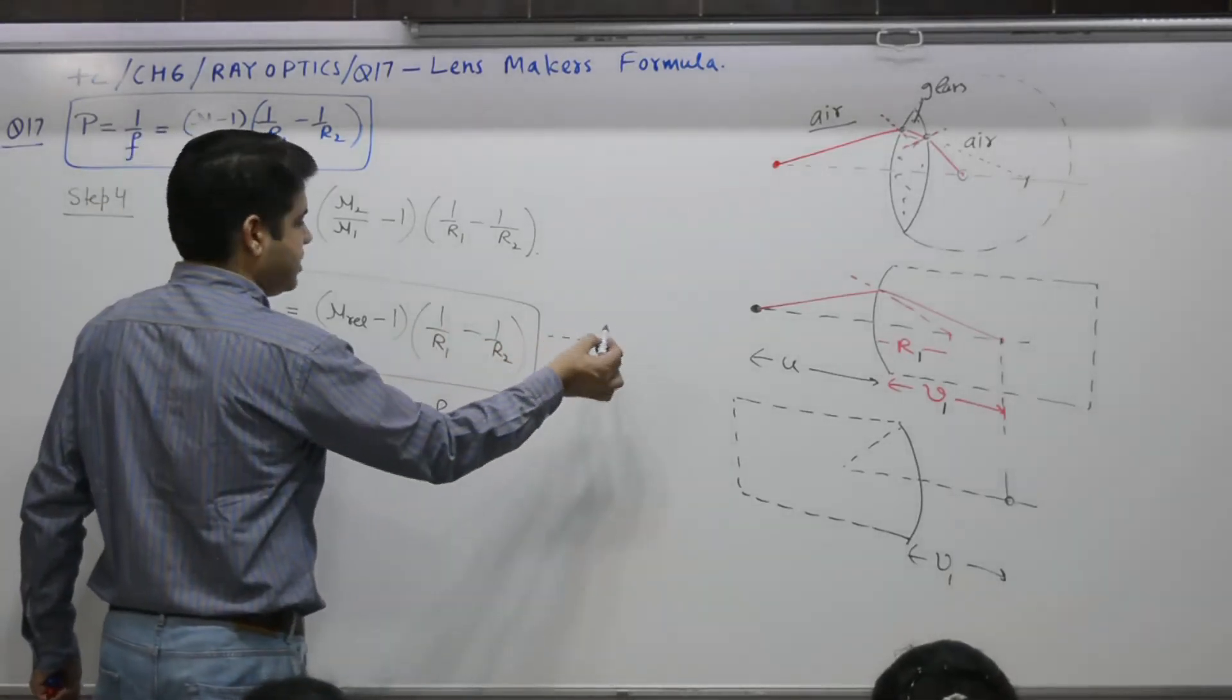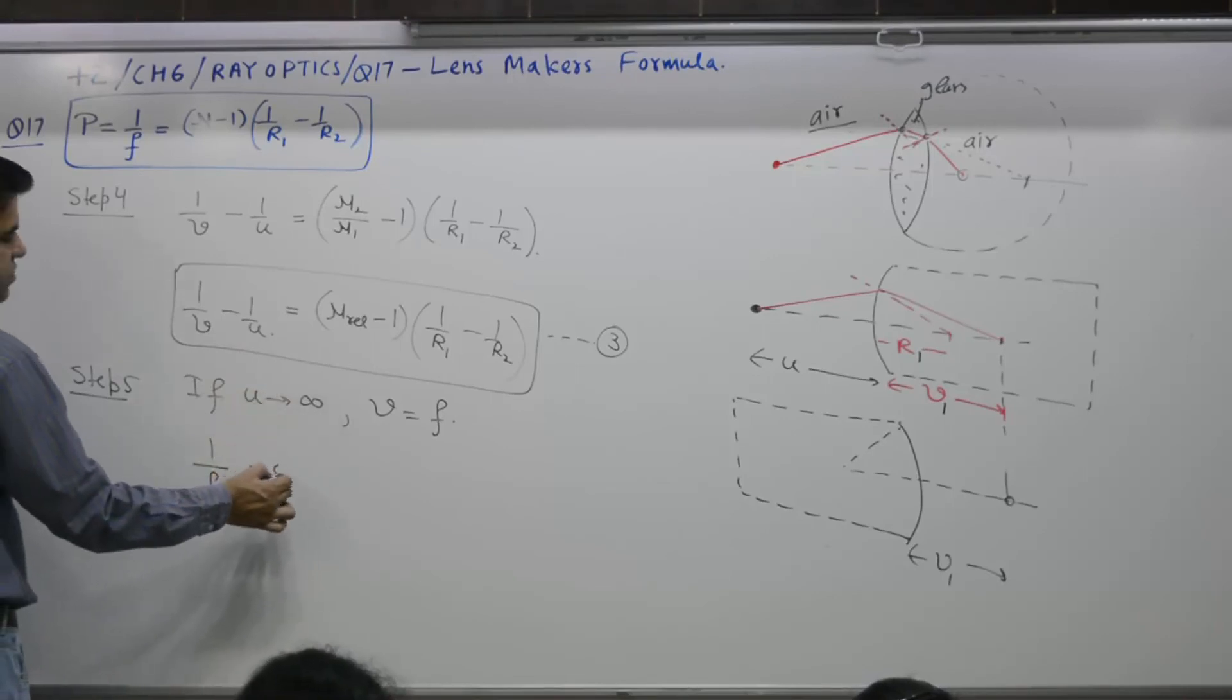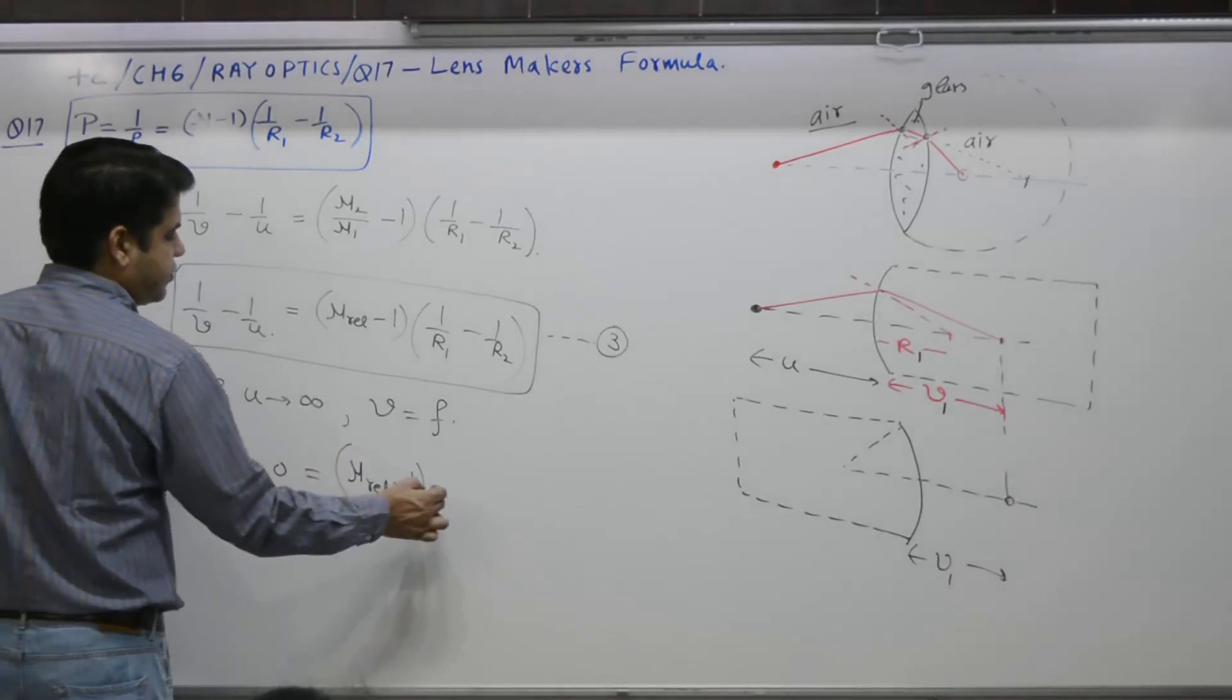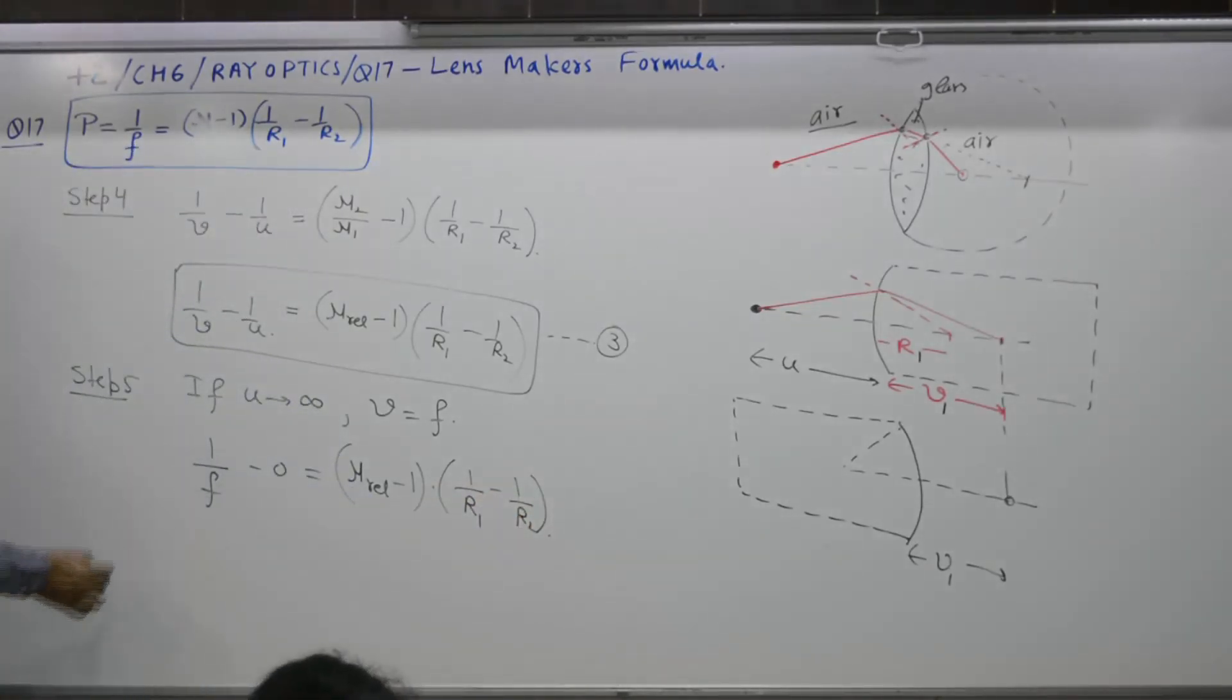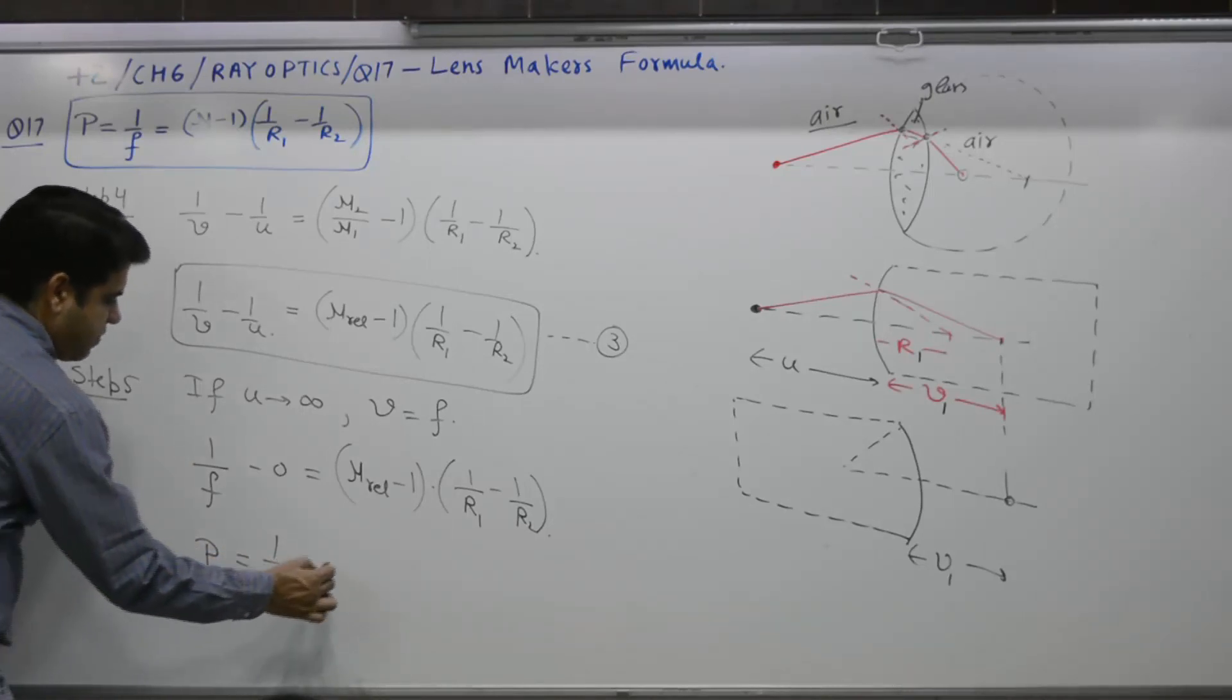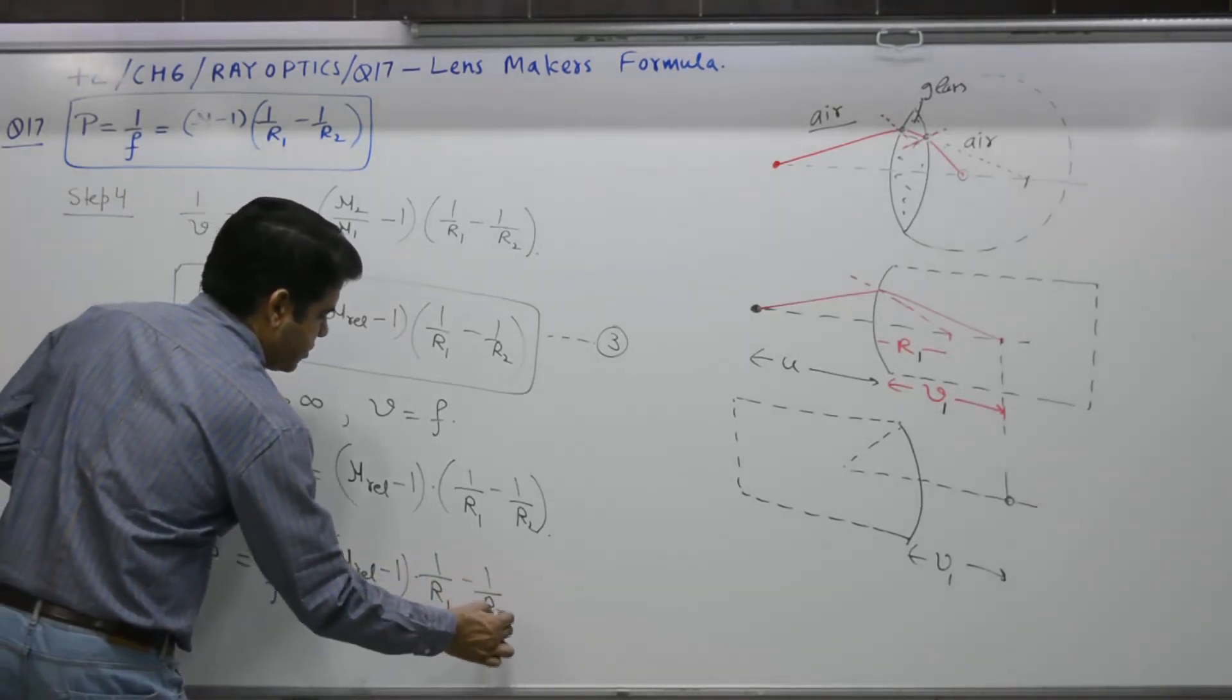This one. Equation number 3. 1 by V means what? 1 by F. 1 by infinity is what? 0. Is equal to nu relative minus 1, 1 by R1 minus 1 by R2. So, this 1 by F is what? Power. Power is equal to what? 1 by F is equal to nu relative minus 1, 1 by R1 minus 1 by R2.